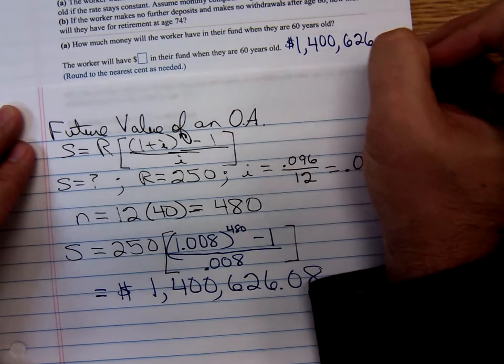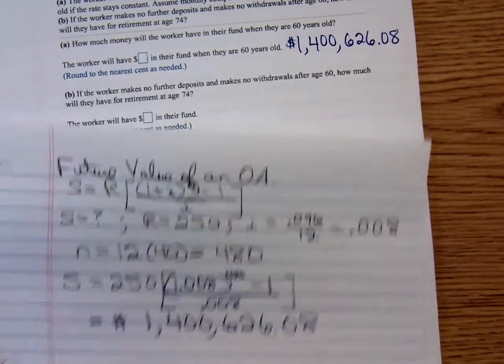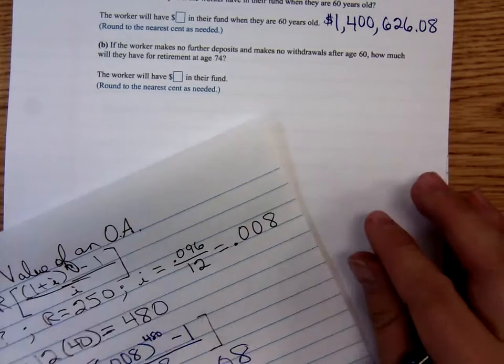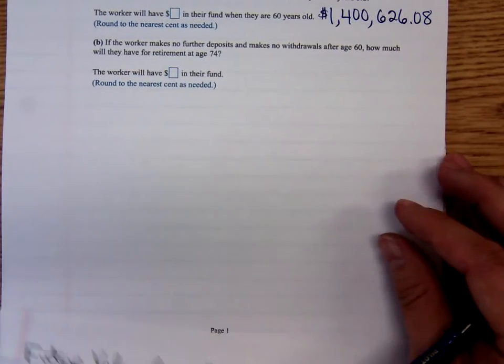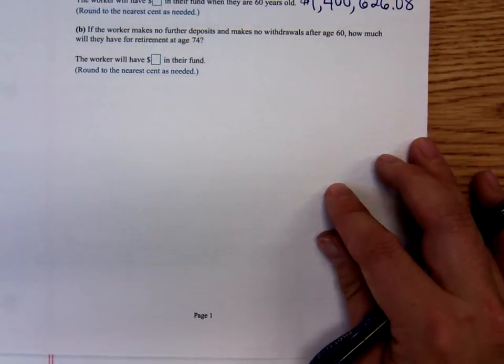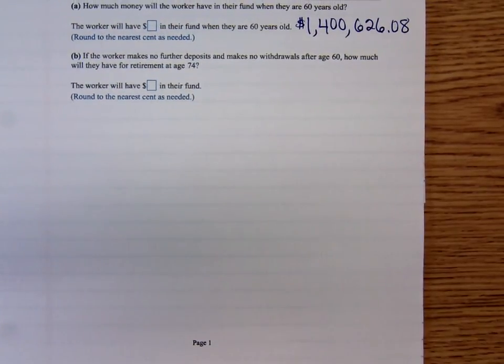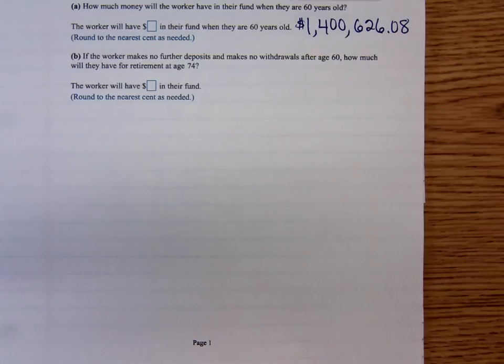For the first part, they're going to have $1,400,626.08 in the account. Now let's go into part B. If the worker makes no further deposits into the account and makes no withdrawals after age 60, how much will they have for retirement at age 74?